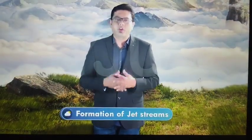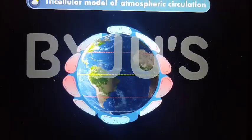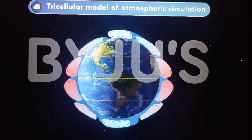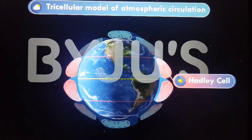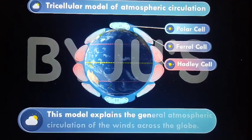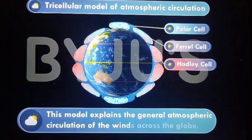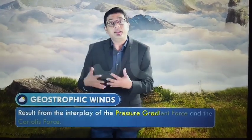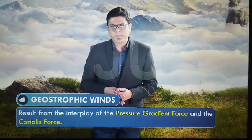Now let's discuss the formation of jet streams. Before we dive in, there are two concepts we need to revisit. First, the tricellular model of atmospheric circulation — the Hadley cell, the Ferrel cell, and the polar cell — which explains the general atmospheric circulation of winds across the globe. The second concept is geostrophic winds, which result from the interplay of the pressure gradient force and the Coriolis force.